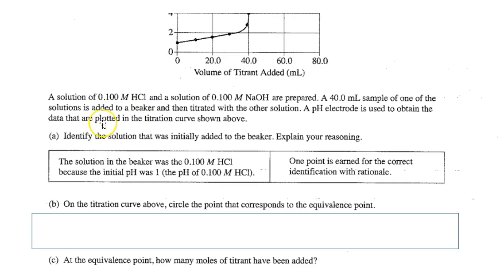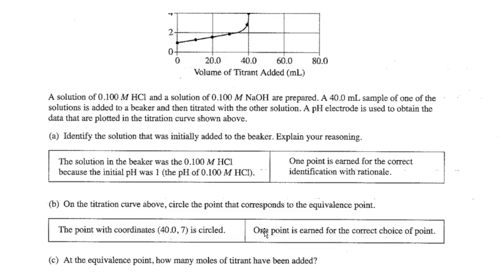I actually couldn't see that question. Identify the solution that was initially added to the beaker. Well, it would be the acid, and you'd drip in the base because the pH goes up. Boy, is that an easy question. I'd say it's the point with coordinates 40 and 7. These are nice, easy questions.